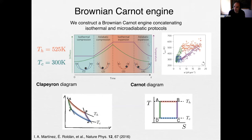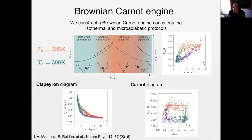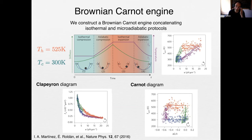Different symbols correspond to different cycle speeds — slow cycles match Carnot predictions closely; fast cycles deviate from equilibrium as expected. The Clapeyron diagram (pressure vs. volume) and the Carnot diagram (temperature vs. entropy) both show the adiabatics as vertical lines in the T-S plot — entropy doesn't change during those steps — which we could achieve experimentally. This was a key achievement: the first Carnot cycle ever designed in an experiment at the colloidal scale, now in Wikipedia.